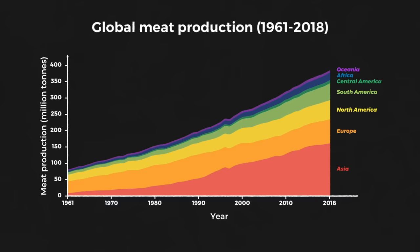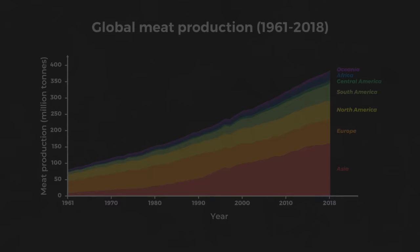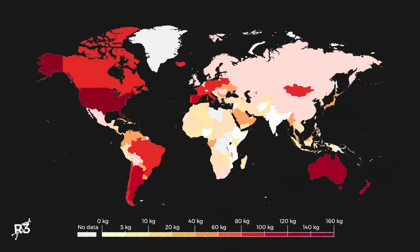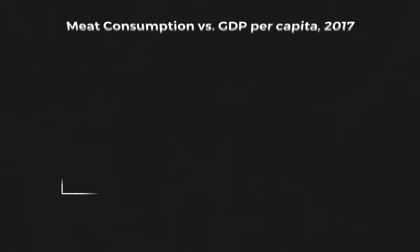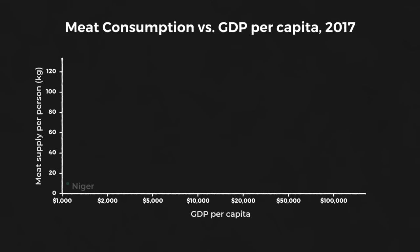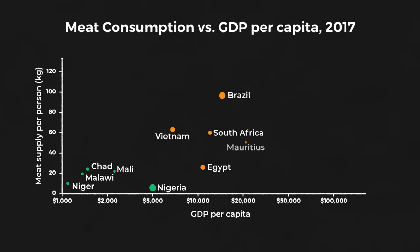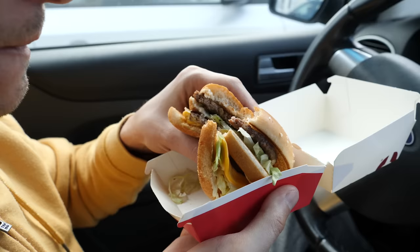Globally, we consume over 365 million tons of meat every year. The top meat-eating countries, like the US and Australia, annually eat around 120 kilograms per person. And our meat consumption is only set to continue. As developing countries grow richer, more people can afford more and more meat. And developed nations are also predicted to keep increasing their meat consumption.